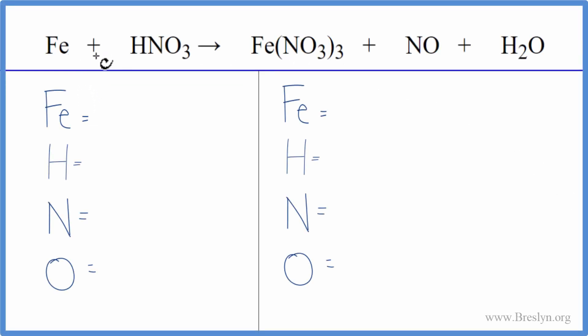To balance this equation, iron plus nitric acid, let's count the atoms up on each side of the equation. This is a bit of a challenging equation, so let's see what we can do.